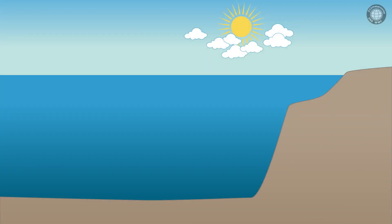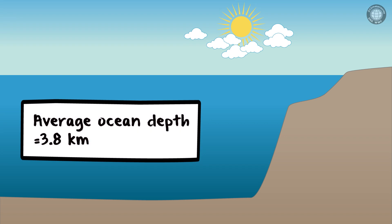In this graphic, we can see a representative section of a continental margin. The sea surface is at the top. The average ocean depth is 3.8 kilometers, and we obtain the sediments we are talking about from several kilometers of water depth.